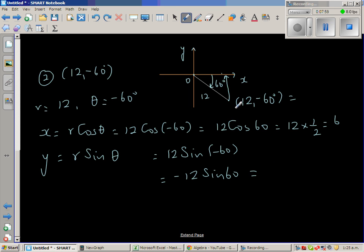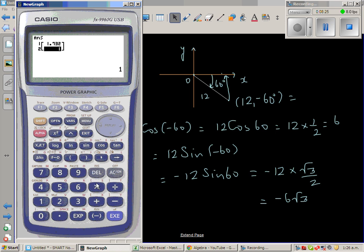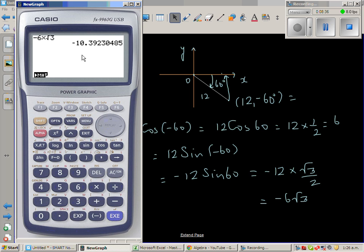And it makes sense because sin corresponds with y, and that would be negative. So it's -12 times sin 60° is √3 over 2, which is -6√3. So we can see the coordinates. So let us use a calculator.